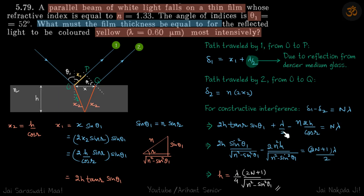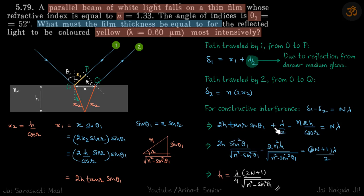Using minus lambda by two instead gives two N plus one times lambda by two. From the geometry, tan R is sin theta-one over this expression. Substituting the value of cos R, after simplification — done separately due to space — the only variable remaining is H. So we find the value of H. If you change the sign, the sign here will change, but it does not matter.